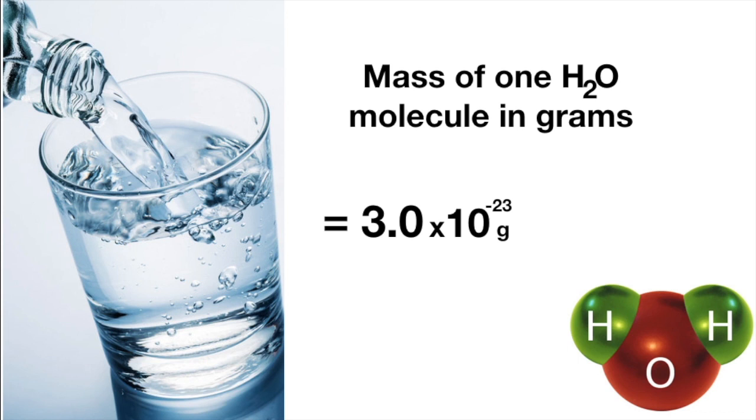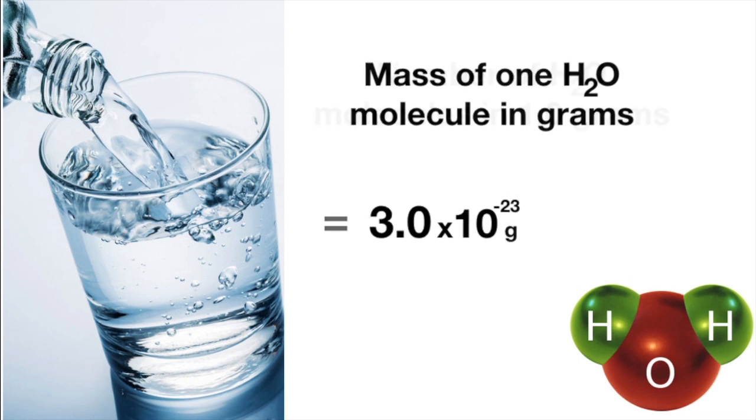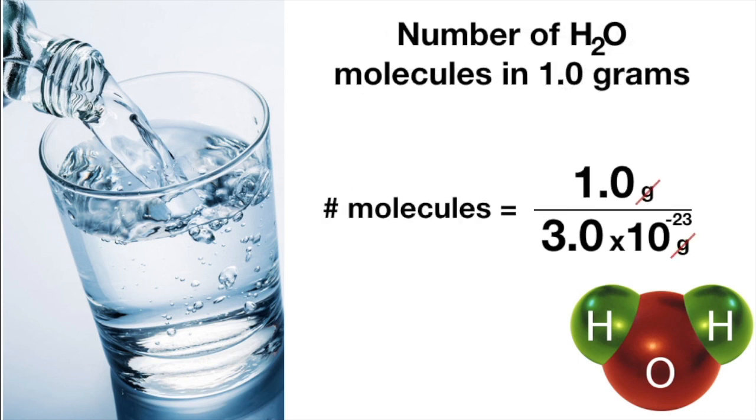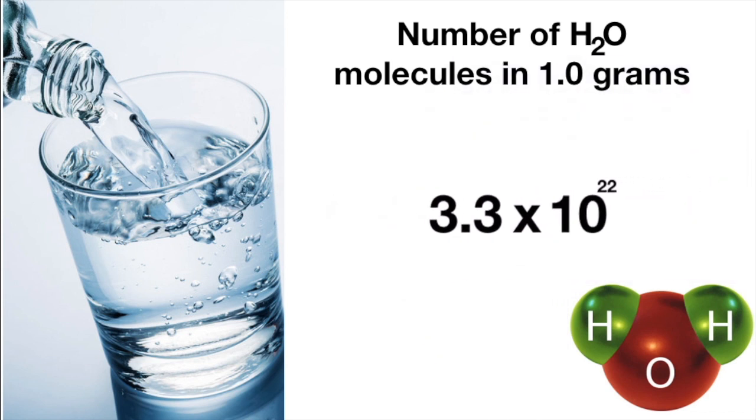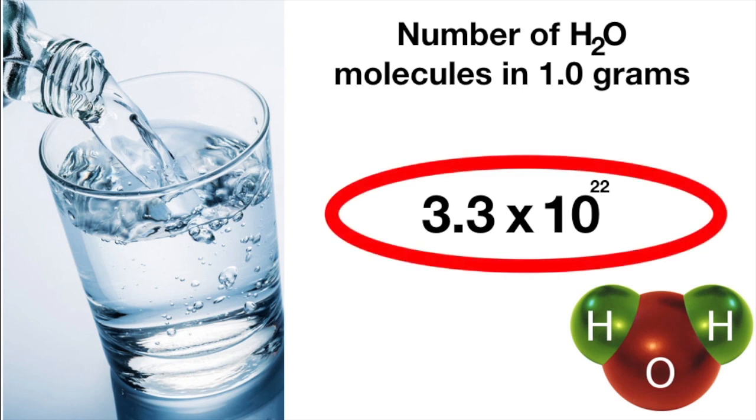And from here, to calculate the total number of molecules in one gram of water, you simply need to divide the total mass of water that you have by the mass of a single molecule. And we get this fantastically large number. And that's all there really is to it. Easy!